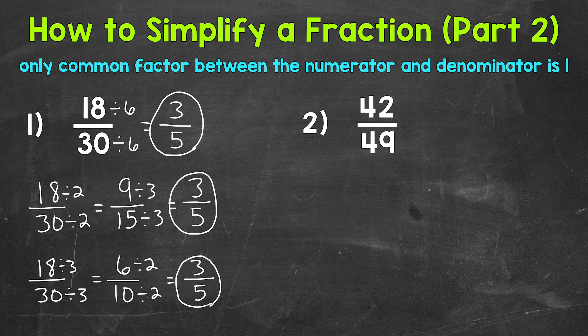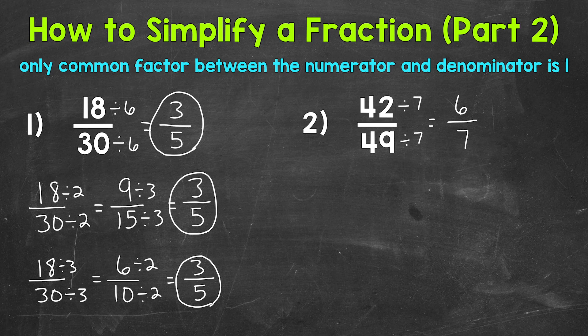If you have a common factor, you can just start there and begin breaking the fraction down, then see if you can continue simplifying or if the only common factor is one and you're in simplest form. So let's divide both by 7: 42 divided by 7 is 6, and 49 divided by 7 is 7. The only common factor between 6 and 7 is 1, so this is in simplest form. And 7 happens to be the greatest common factor between 42 and 49, so we were able to simplify in one step.